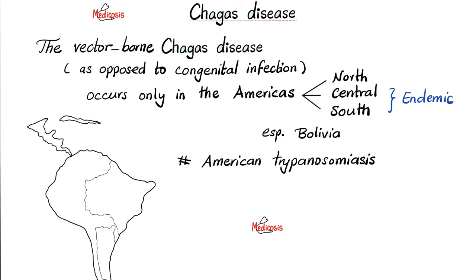There are many ways of contracting Chagas disease. One is vector-borne. The vector-borne variant of Chagas disease occurs only in the Americas — North America, Central America, and South America. As of this recording, Chagas disease is endemic in Central and South America, especially Bolivia. That's why we call it American trypanosomiasis, as opposed to African trypanosomiasis caused by Trypanosoma brucei.